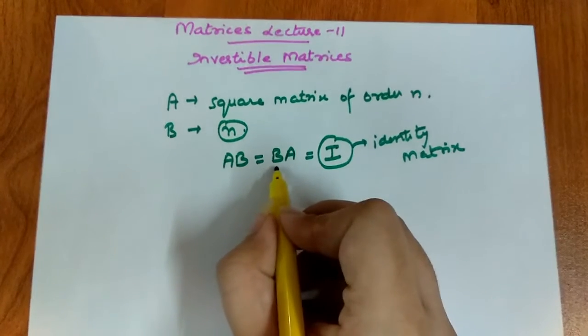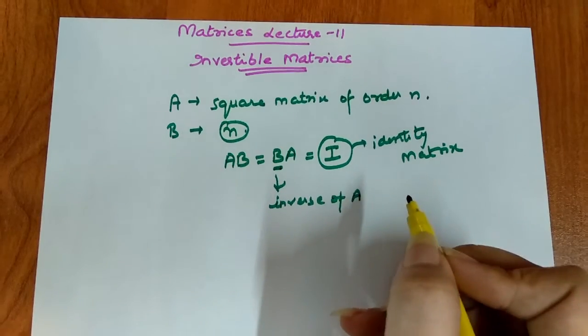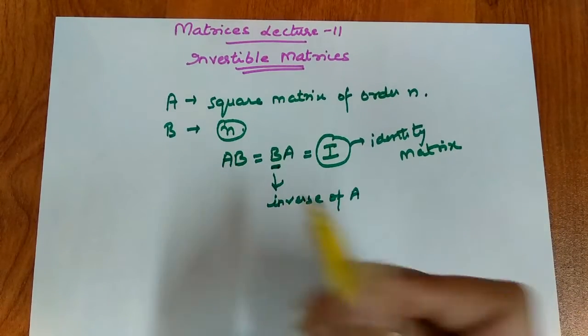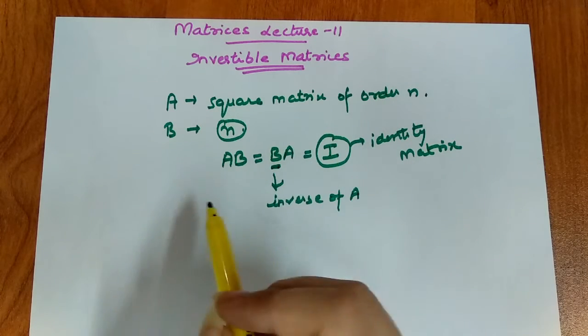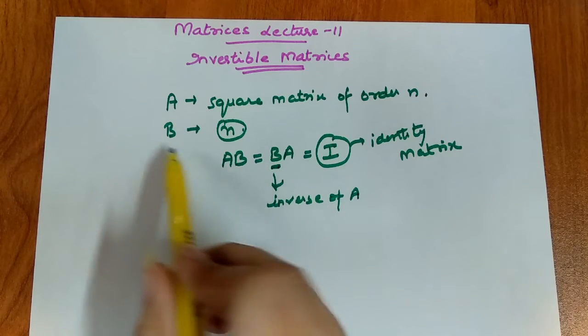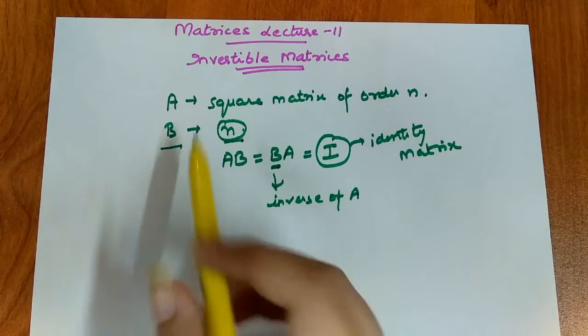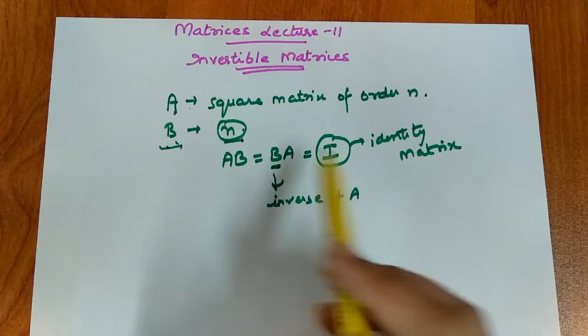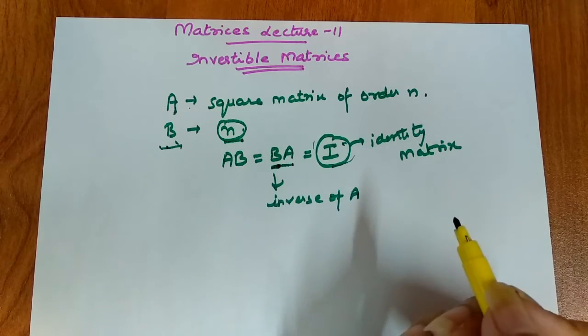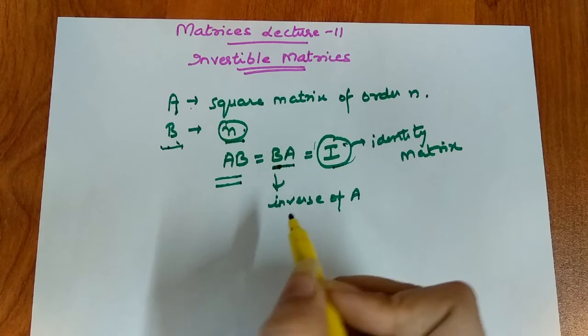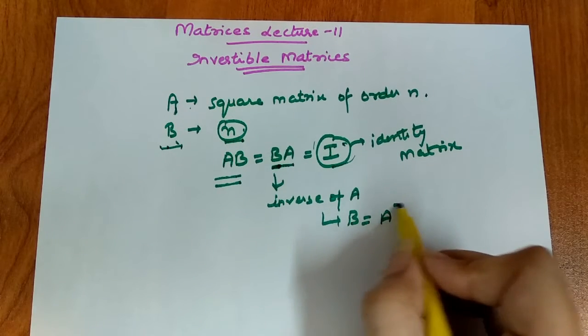Then in that case, B is the inverse of A. So basically, we have a matrix A, a square matrix of order n, and another matrix B which exists with the same order n. When the product of AB is equal to the identity matrix and this condition is fulfilled, then B is our inverse matrix of A, and B is usually denoted as A inverse.